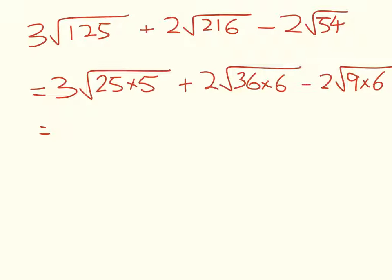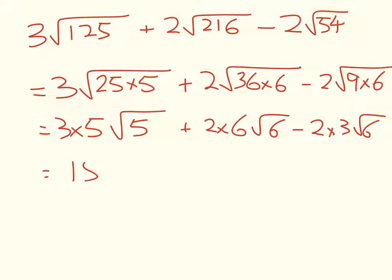So that equals 3 times 25 times 5 plus 2 times 36 times 6 minus 2 times root 9 times 6. So 3 times 5 root 5 plus 2 times 6 root 6 minus 2 times 3 root 6. That equals 15 root 5 plus 12 root 6 minus 6 root 6. So let's see what we can and can't put together in here.